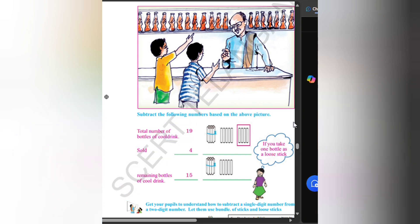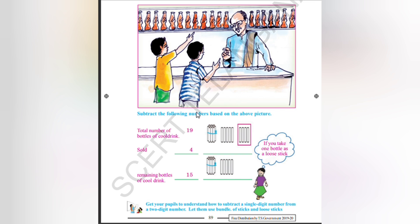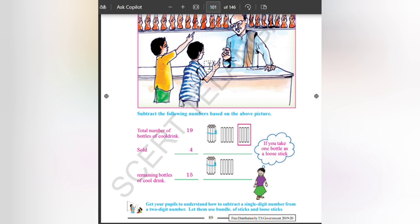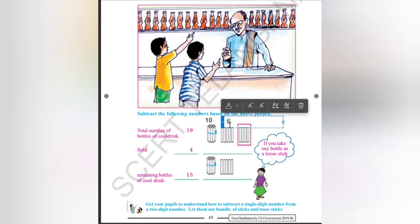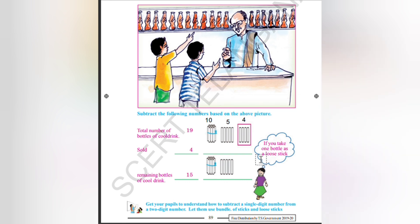So write here: 10 is there. Here 10, here 5, here 4. So all remaining is 4 and 15 will be remaining. That is 10 sticks in one bundle and 5 remaining. That is the loose stick sum.